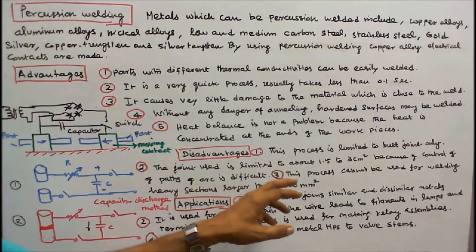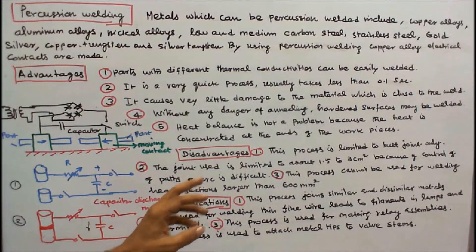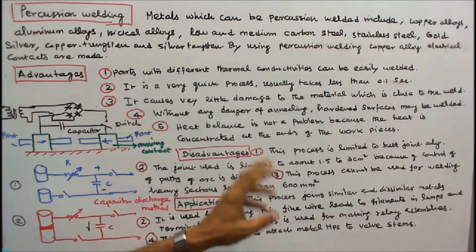Number three: this process cannot be used for welding heavy sections larger than 600 mm square.